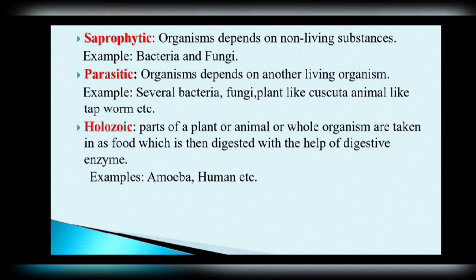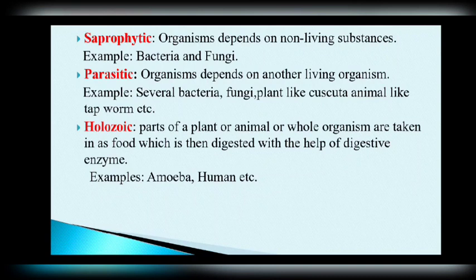Parasitic nutrition is a type of nutrition in which an organism depends on another living organism. It is different from saprophytic nutrition because saprophytic organisms depend on dead material, whereas in parasitic nutrition the organism depends on a living organism. Examples include several bacteria, fungi, plants like Cuscuta, and animals like tapeworm.